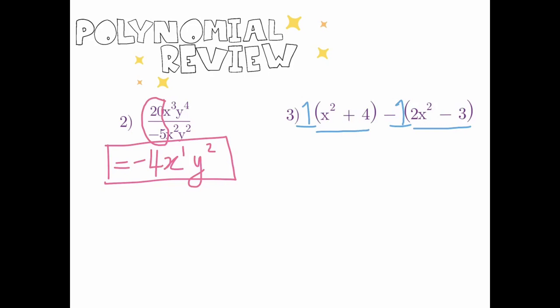To help you visualize, you're taking that 1 and multiplying it to both terms inside the bracket. Once the bracket ends, you stop and move on to the next one — here it would be negative 1 times 2x squared, and negative 1 times negative 3. So: 1 times x squared stays x squared, and 1 times positive 4 is plus 4. Then negative 1 times 2x squared is negative 2x squared, and negative 1 times negative 3 is positive 3.